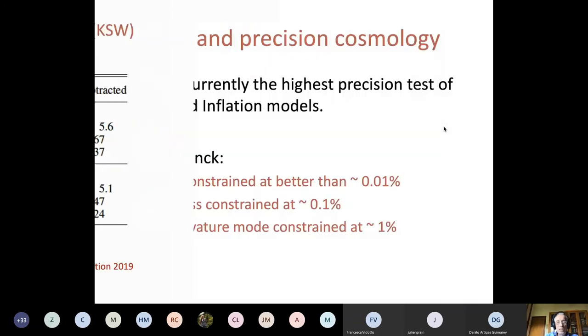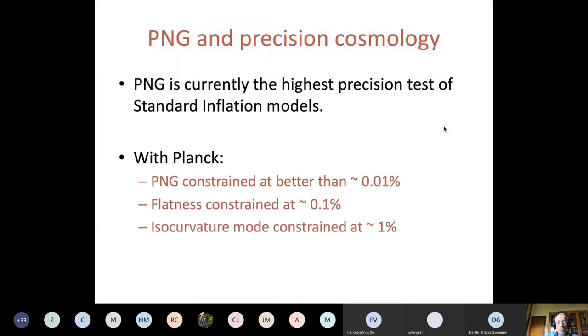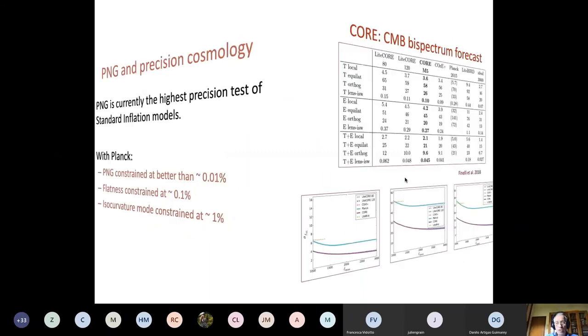To summarize up to this point, the lensing ISW is currently the highest precision test of standard inflation models with Planck. PNG is constrained at better than 0.01%, while for instance flatness, spatial flatness of the universe is constrained up to 0.1% and the presence of the curvature mode is constrained to be up to 1%. So it's really the best determination we ever had at this point.